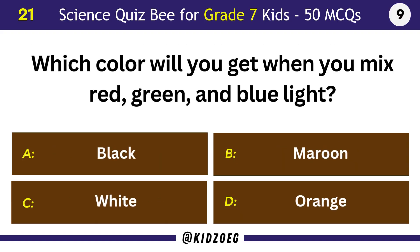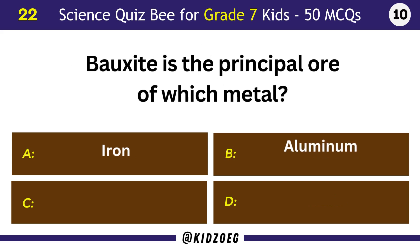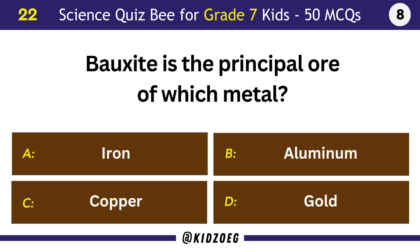Which colour will you get when you mix red, green and blue light? Bauxite is the principal ore of which metal? Aluminum.